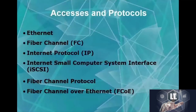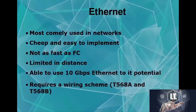Next we'll talk about accesses and protocols, covering Ethernet, Fiber Channel, IP, iSCSI, FCP (Fiber Channel Protocol), and Fiber Channel over Ethernet. Ethernet is most commonly used inside the network — the typical RJ45 with 8 pins. It's cheap and easy to implement, but you need to match cable speeds; for example, you can't use CAT3 NICs in a CAT5 network.